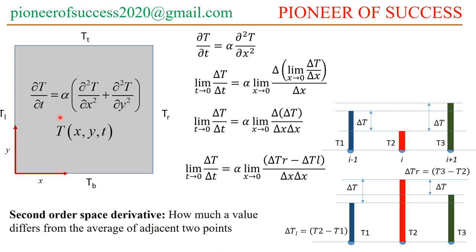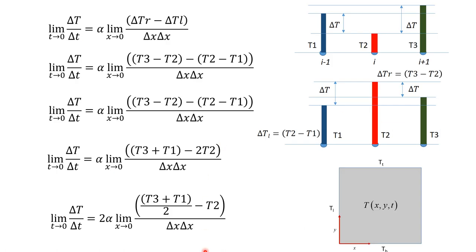This is the heat conduction equation and it has a relation between the first-order time-dependent derivative and the second-order space-dependent derivative. If we are working in two dimensions, then we have two second-order derivatives with respect to each coordinate axis — the x-directional and y-directional — where x and y are perpendicular directions in Cartesian coordinate frames. This is how the equation is related.